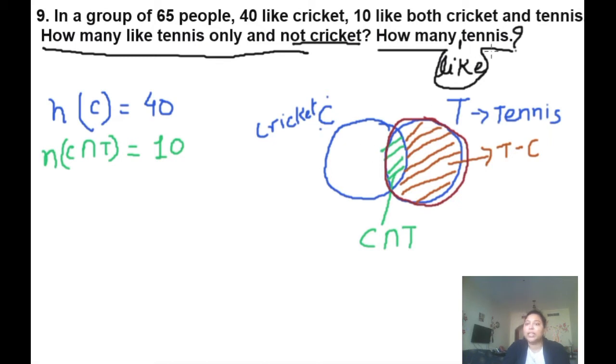Because how many like tennis? This common part also likes tennis because they like cricket and tennis both. So second part is the complete circle of tennis. It means first part is number of people T minus C.